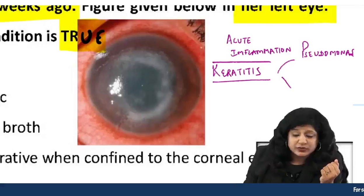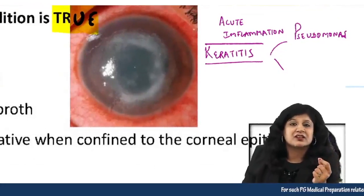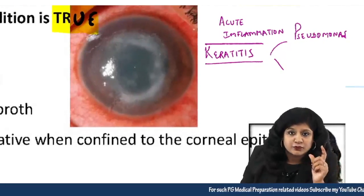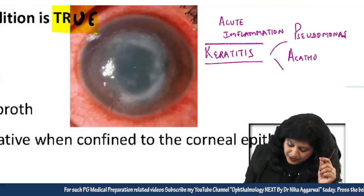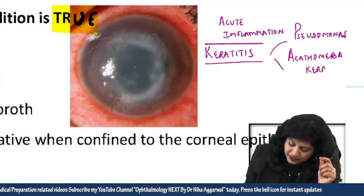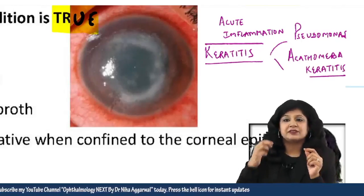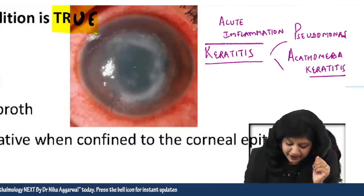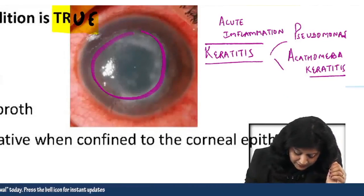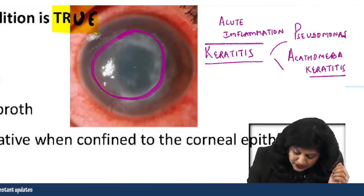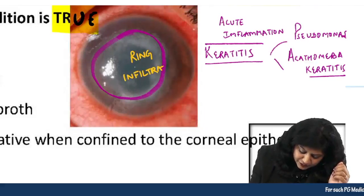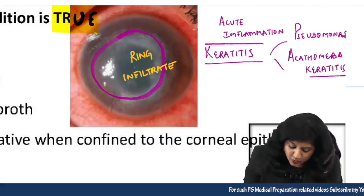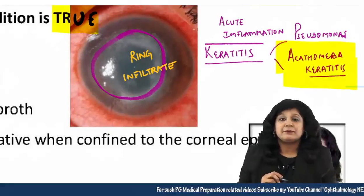We also know that the most common risk factor for Acanthamoeba keratitis is contact lens use. So we can think about Acanthamoeba keratitis as well. These are the two differentials before seeing the picture. Now, having seen the picture, can you see a typical ring infiltrate? This ring infiltrate — a ring abscess — strongly favors Acanthamoeba keratitis.